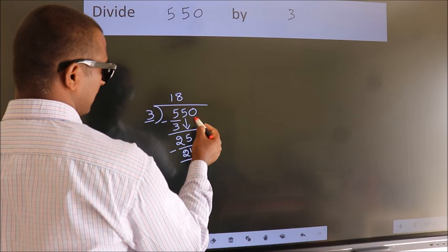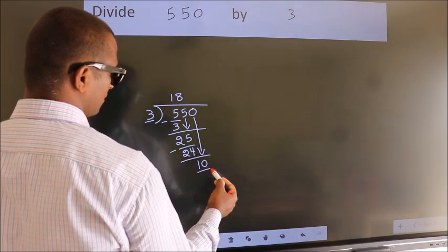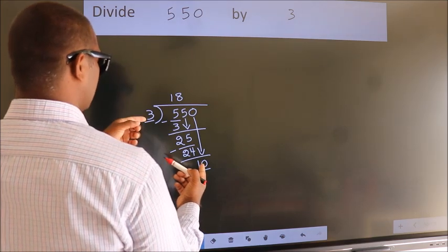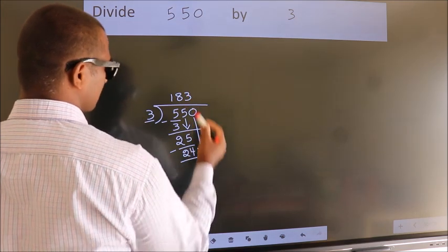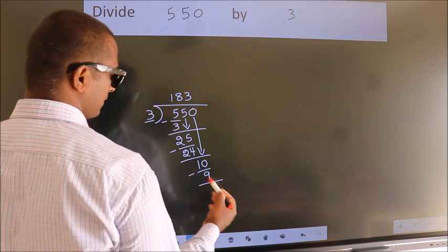After this, bring down the beside number. So 0 down, 10. A number close to 10 in the 3 table is 3 times 3 equals 9. Now we subtract. We get 1.